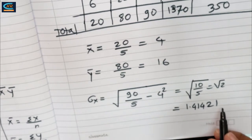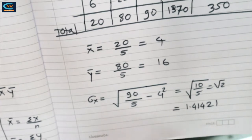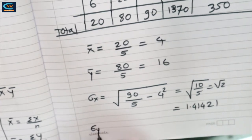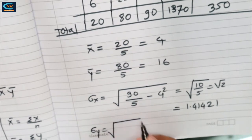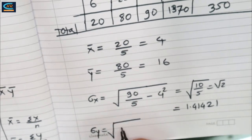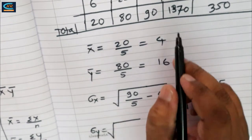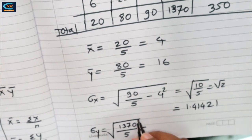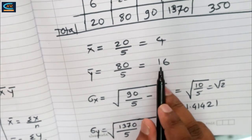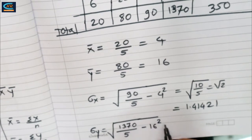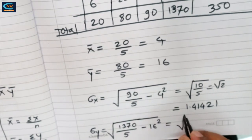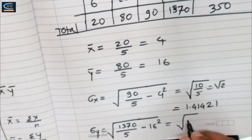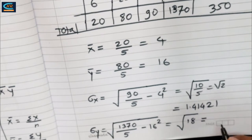Standard deviation in y equals the square root of (sum of y-squared divided by n) minus y-mean squared, that is the square root of (1370 divided by 5) minus 16-squared, which gives the square root of 18, equal to approximately 4.24264.